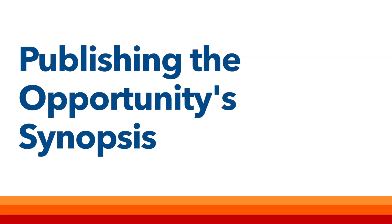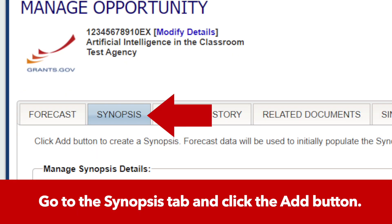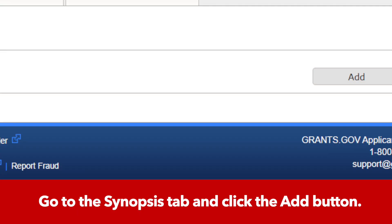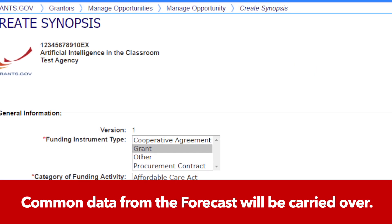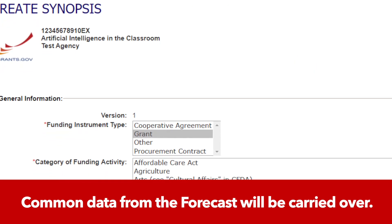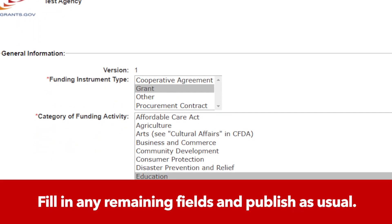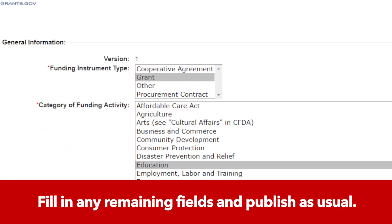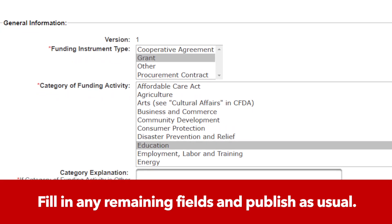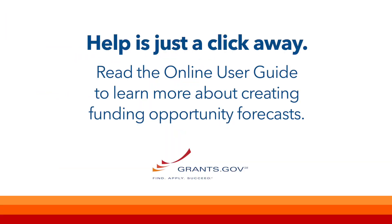When you're ready to publish the opportunity's synopsis, go to the Synopsis tab on the Manage Opportunity page and click the Add button. Common data from the forecast will automatically be filled on the Create Synopsis page. Complete any remaining synopsis fields and publish as usual.